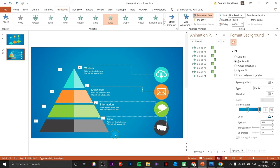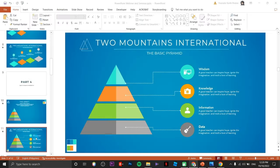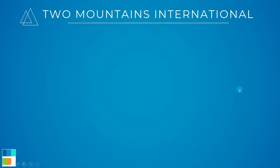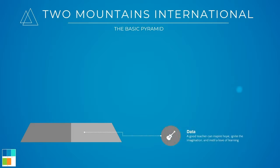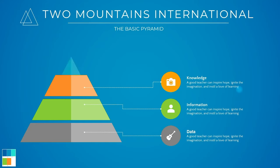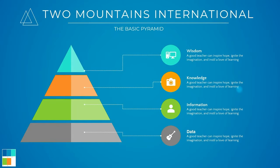I already have the final output ready — let's try to preview this one. Click and the description appears, click next and the next description follows, and the last one. That is how you create a pyramid in PowerPoint.